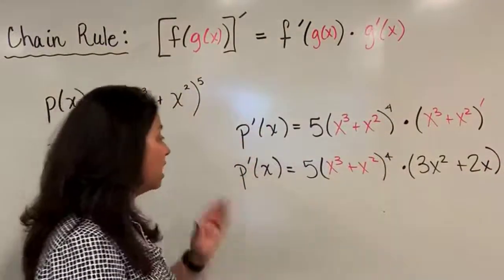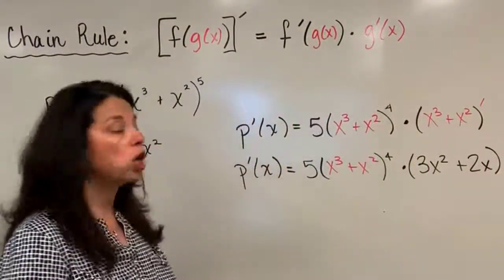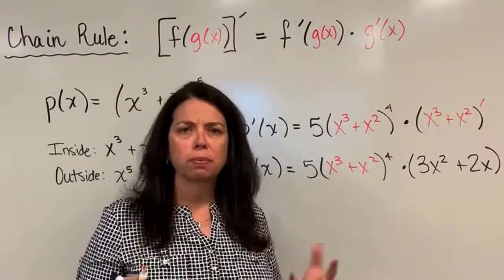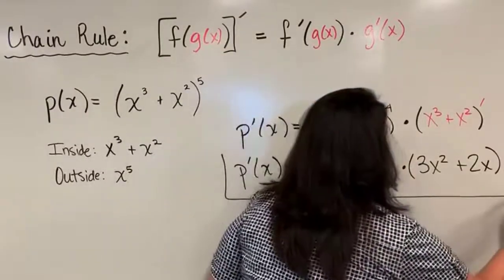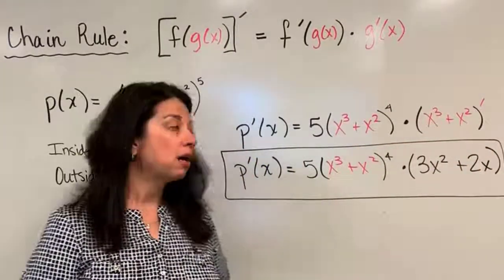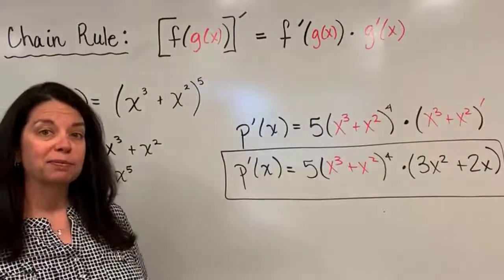And I can leave my equation just like that if I would like. No sense in multiplying out and distributing and all these things. It's best to leave it in factored form and then that is then my derivative of p of x from what I started with. All right, thanks.